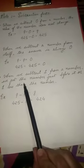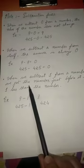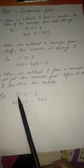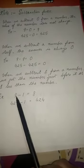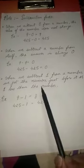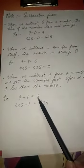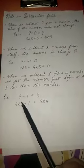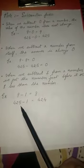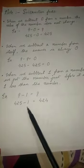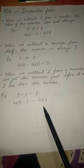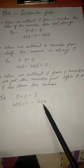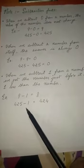Fact number 3: when we subtract 1 from a number, we get the number just before it — that is, 1 less than the number. For example, 9 minus 1 equals 8, because 8 comes before 9. Similarly, 425 minus 1 equals 424. You can also say that 8 is the predecessor of 9, and 424 is the predecessor of 425.